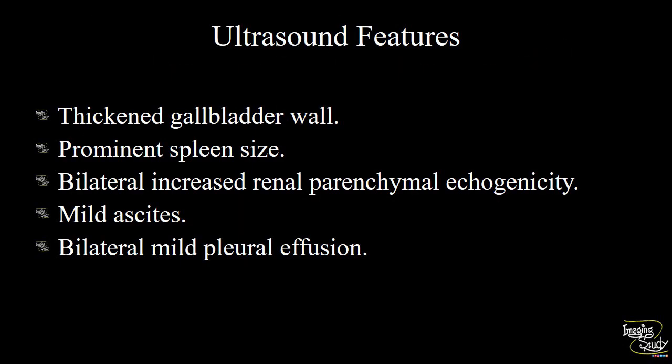Let's make a summary of the features seen. We have seen thickened edematous gallbladder wall. The spleen looks prominent for this 16-year-old patient given their body status, so we report it as a prominent spleen. Bilateral renal parenchymal echogenicity appeared increased, mild peritoneal collection (ascites) was present, and we have seen bilateral pleural effusion.